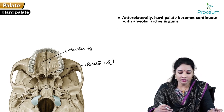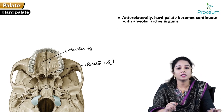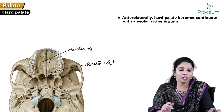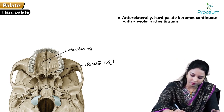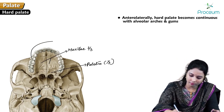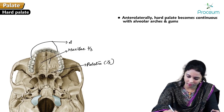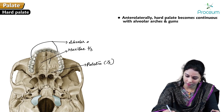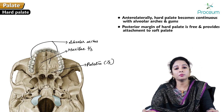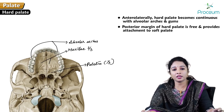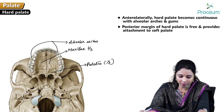Anterolaterally, the hard palate becomes continuous with the alveolar arches and gums. The posterior margin of the hard palate is free and provides attachment to the soft palate.